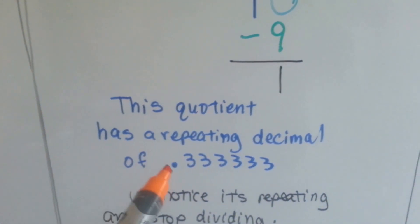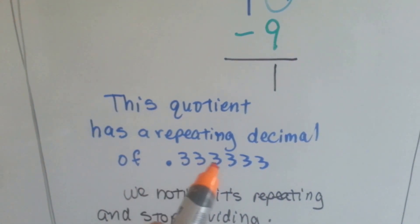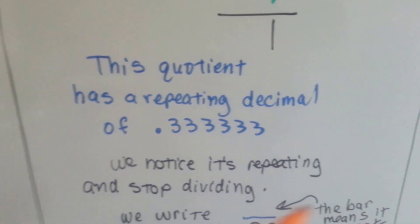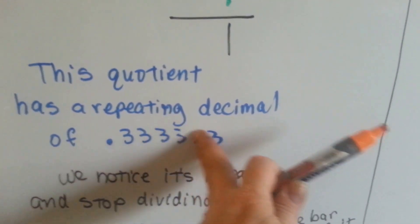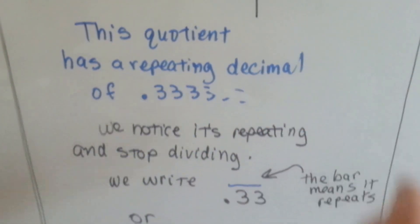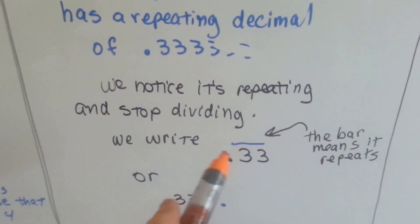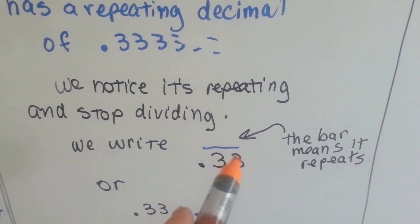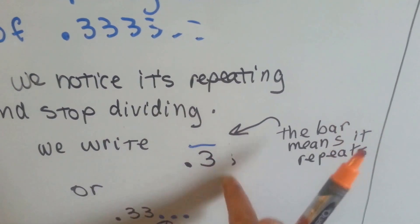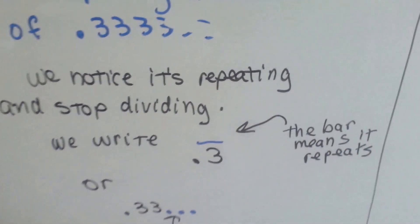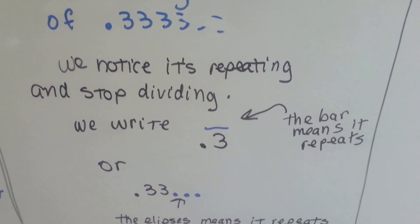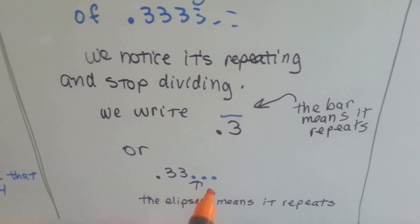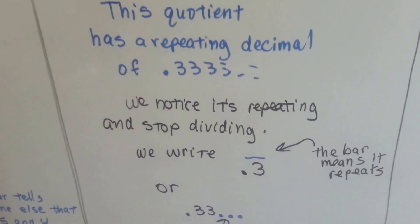This quotient has a repeating decimal of 3, 3, 3, 3 — repeating endlessly. We notice it's repeating and we stop dividing, hopefully around here so that you don't have to keep going. We write a 3 with the bar over the top, or we could even write just a 3 with a bar over the top like that. Or we could put the 3 dots — the ellipsis — which means it repeats.